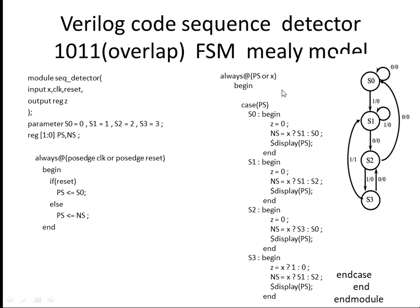This is the main logic. Always at the rate of change of present state or X — whenever it is changing — begin case. Suppose present state is S0: output Z is 0, and next state is equal to — if X is 1 it goes to S1, if X is 0 it remains at S0. A display statement shows the present state.